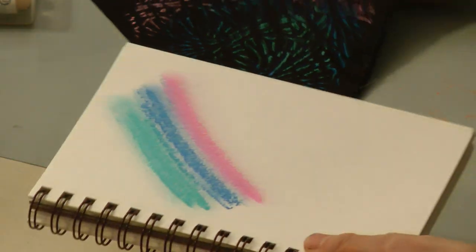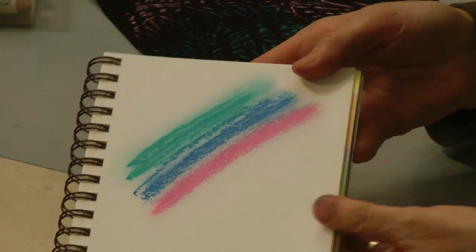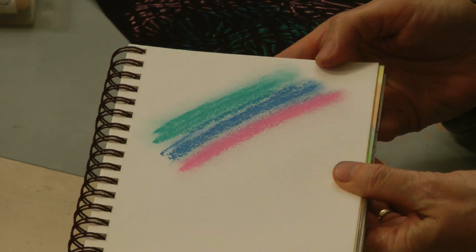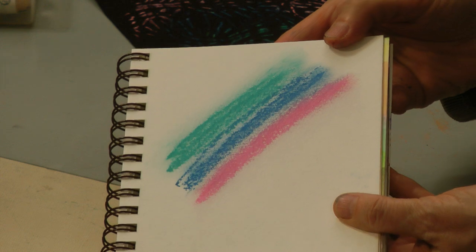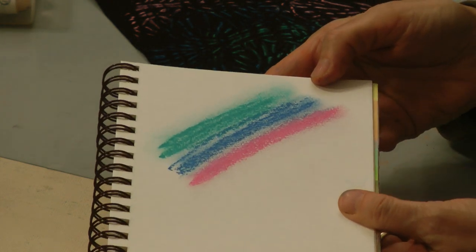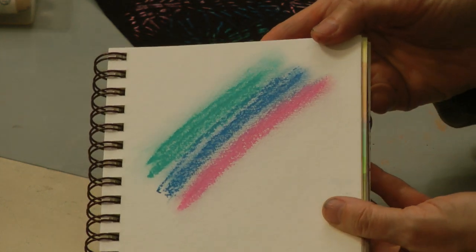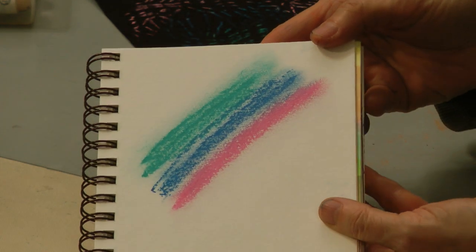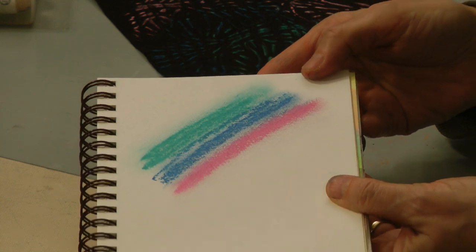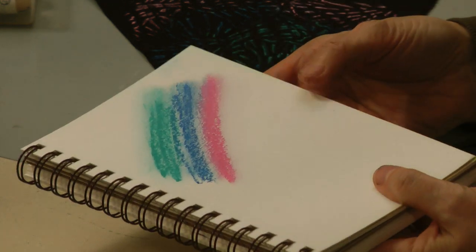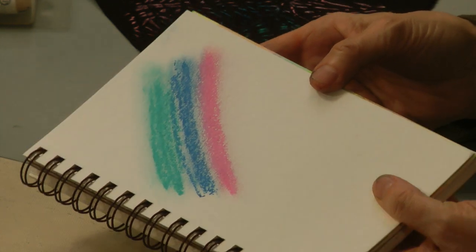And then on paper, this is what they look like on the paper, and I'm going to see if I can catch the shimmer. The iridescent ones are highly reflective. I don't think I'm going to be able to catch it, but they're very reflective in real life, and you can do some really cool things with them.